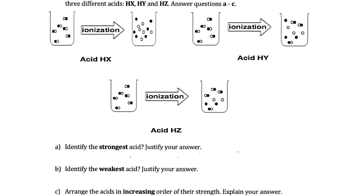In this question, we have a figure showing particulate diagrams of the ionization process of three acids HX, HY, and HZ. Identify the strongest acid and justify your answer. The strongest acid is the one that has dissociated the most. For the first acid HX, we started with six molecules and all six got dissociated — we do not see any HX molecules remaining. The black and white atoms are no longer bonded together.